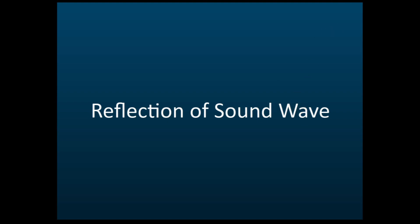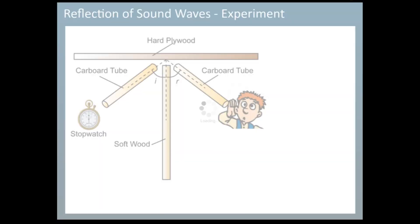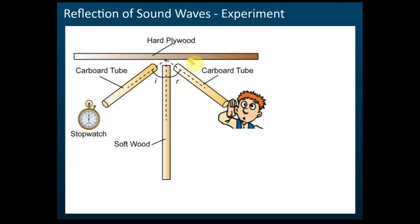This is the experiment on reflections of sound waves. We have a hard plywood to prepare a surface for the reflections, and then we have a soft wood to prevent reflections — because we don't want sound coming here and reflecting back. We only want the reflections to occur here at the hard plywood surface.